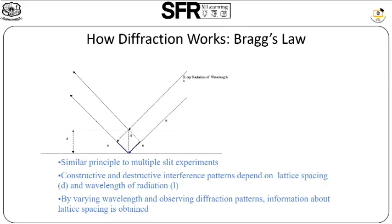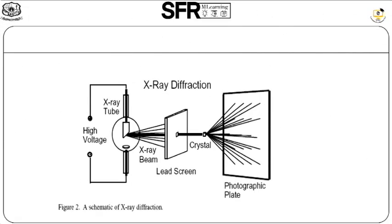By varying the wavelength and observing diffraction patterns, we pass the XRD over the lattice planes. By varying the wavelength, we observe the diffraction pattern and gain information about lattice spacing. From the lattice spacing, we can draw the structure of the crystalline samples. This is the experimental part.